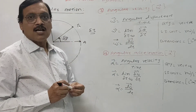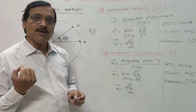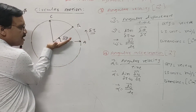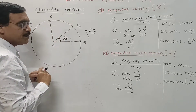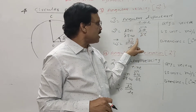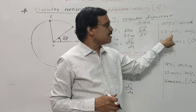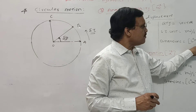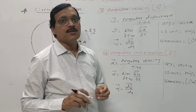Angular velocity is also a vector quantity, and its direction is given by the right-hand thumb rule. The SI unit of angular velocity is radian per second, and its dimensions are L0 M0 T raised to minus 1.